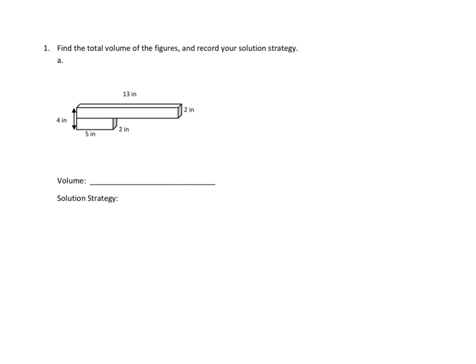So let's see. The long one — I can see the length of that. And the height looks like it is two inches. And the width — it doesn't label the width of this longer rectangular prism, but it does label the width of the smaller one, so I bet that's the same. This would be two inches wide. They both must be two inches wide.